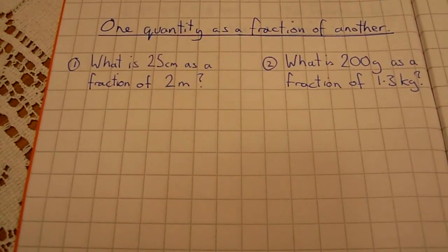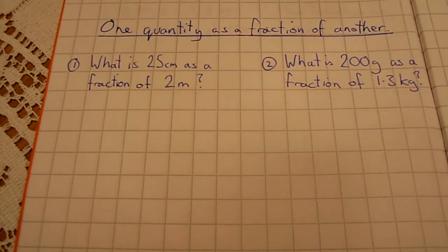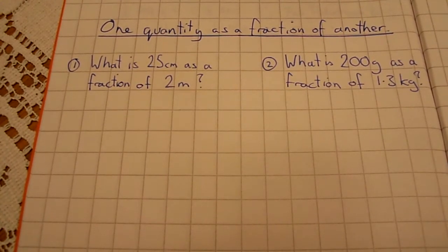Okay, to work out one quantity as a fraction of another at your basic grade D GCSE level, you need to write one as a fraction of the other. Write the first quantity as a numerator and the second as a denominator. Remember to keep all your units the same.